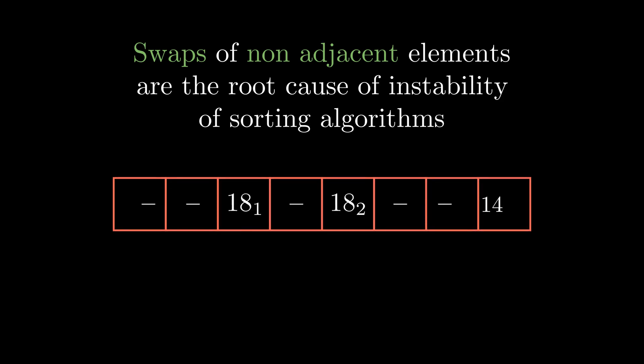In this array, there are two 18s and a 14. Never mind what are the other elements. Now, suppose that the algorithm dictates to you to swap the first 18 with the 14. Now, this swap is going to put 18₁ later than 18₂ which will make the algorithm unstable.